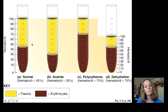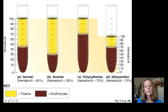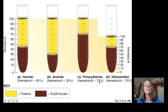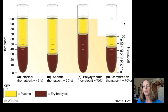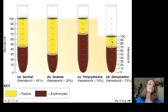Normal blood has a hematocrit of about 45% red blood cells. Anemia is indicated by 30% or lower. The opposite condition, polycythemia — too many red blood cells — occurs at 70% or higher. This can be contrasted with simple dehydration, which also causes high hematocrit because plasma volume is low, not because red blood cells are elevated.